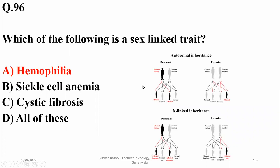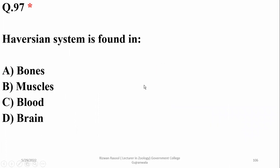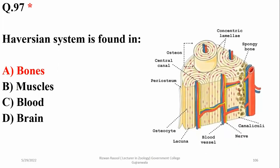Question 97: Another question — the Haversian system is basically found in bones and is responsible for the connection of blood vessels and nerves into the bones.